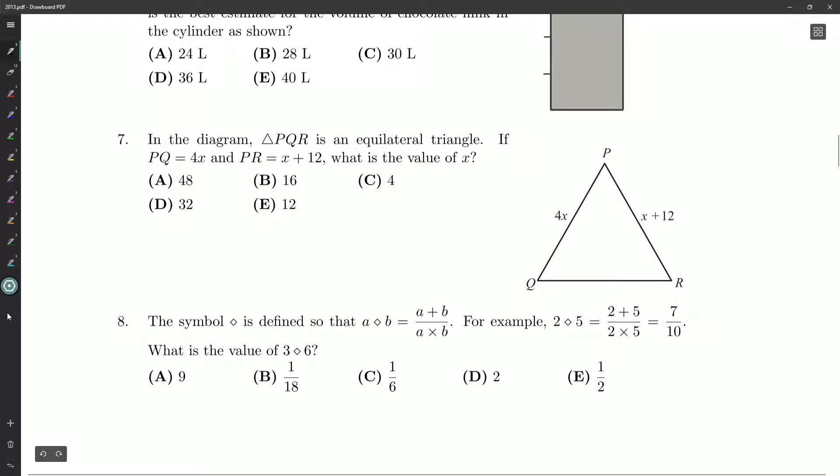Hello everyone, and welcome back to question number seven. In the diagram, triangle PQR is an equilateral triangle. So all its angles are 60 degrees, and all its sides are the same length.